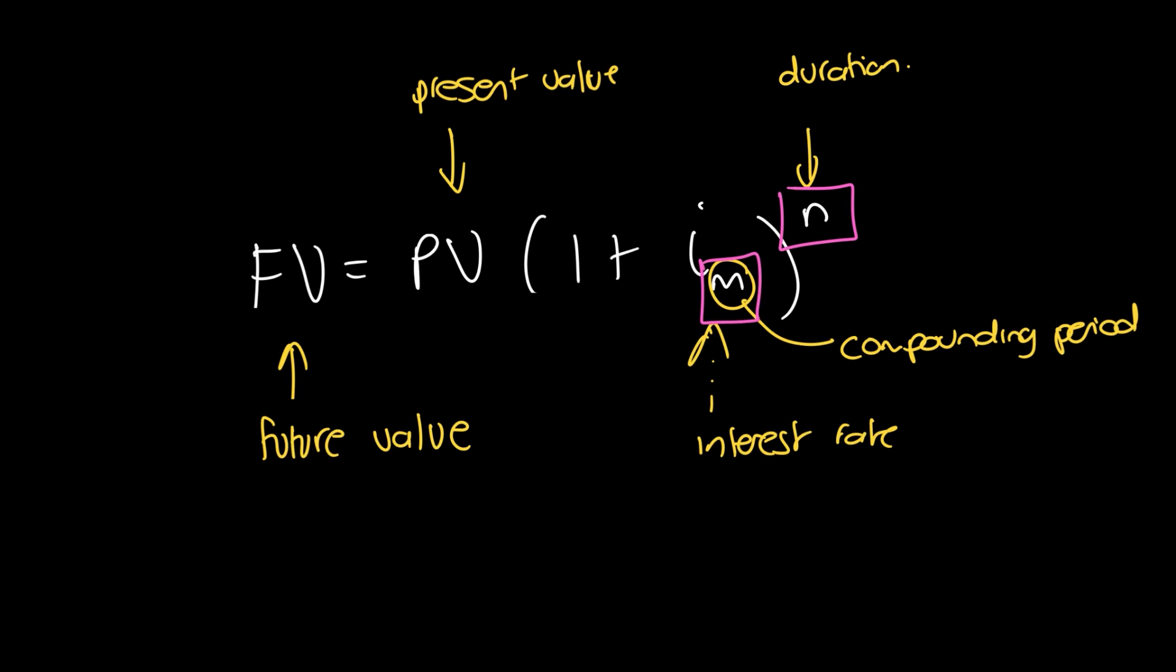Okay, so let's now make the present value the subject of the formula. So we want to look at making PV the subject of the formula for the compound interest equation. So the compound interest equation is FV is equal to PV times 1 plus i over m to the power of n.